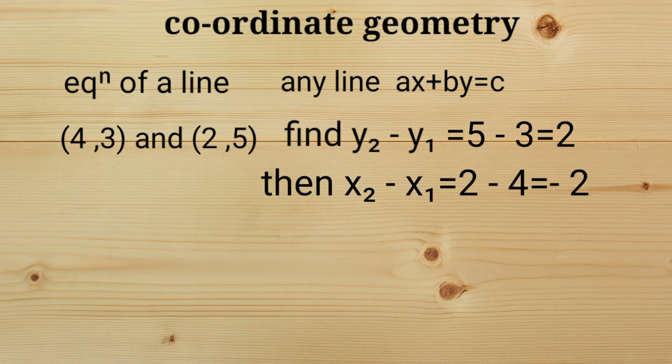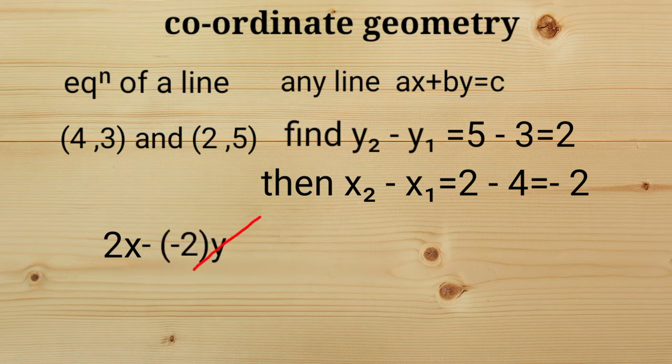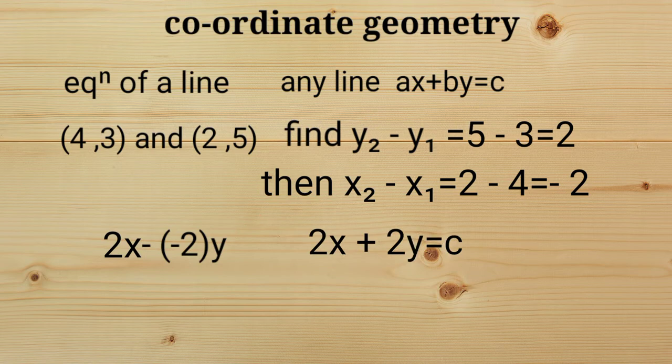Now we shall multiply x to the difference of y and multiply y with the reverse sign to the difference of x. We get 2x plus 2y equals c.